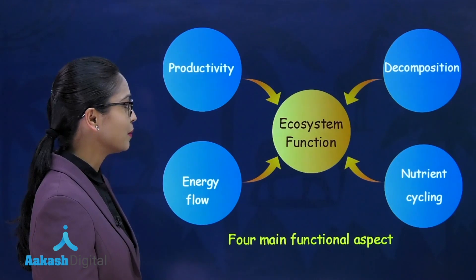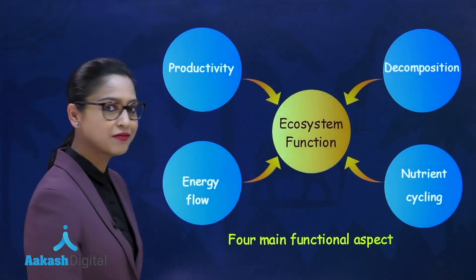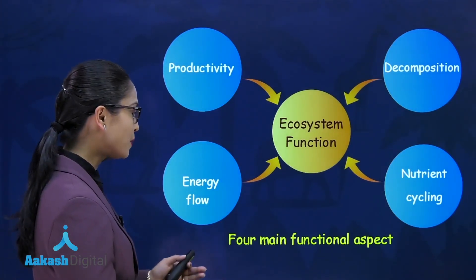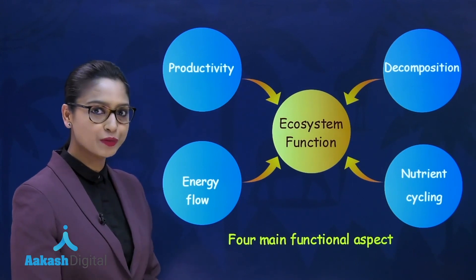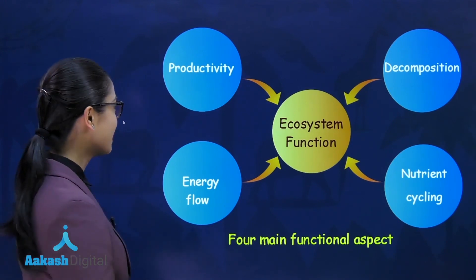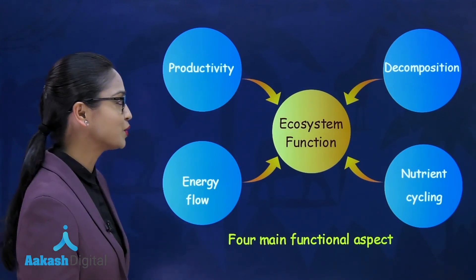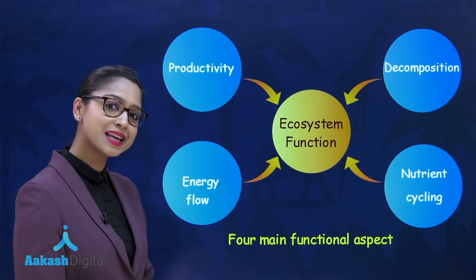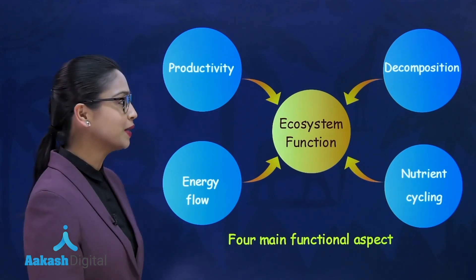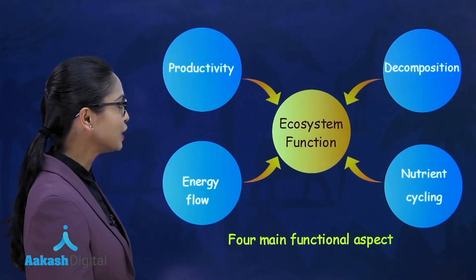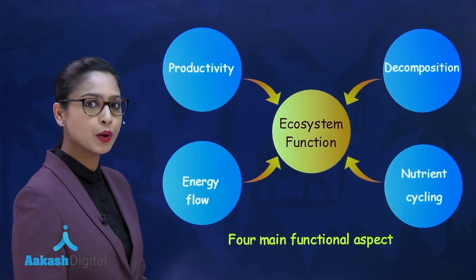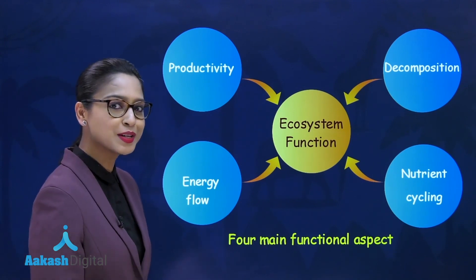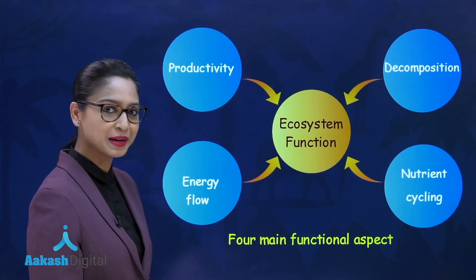Now let's move on to ecosystem functions. There are four main functional aspects of the ecosystem: productivity, decomposition, energy flow, and nutrient cycling. We will discuss each of these functional aspects one by one in the coming segments.